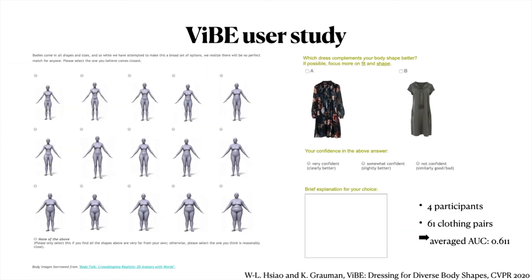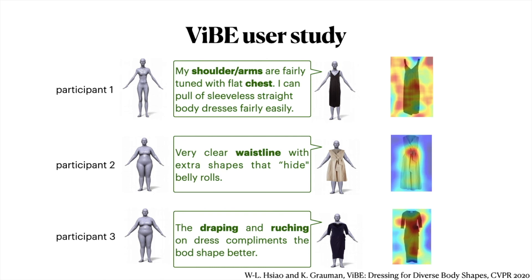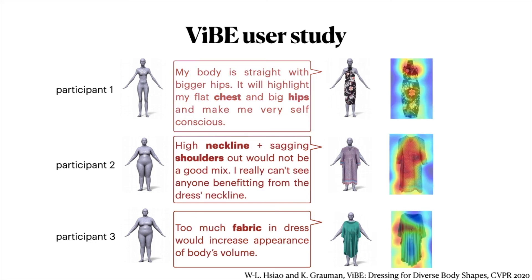As people know their own bodies best, we conduct another user study asking subjects which dress suits themselves best. We first ask subjects to select the body shape that best resembles them and feed the SMPL parameters of the selected bodies as features to our embedding to make predictions. We show cases where subjects explain the garments they preferred or not. Subject 2 prefers the selected dress for a clear waistline with extra shapes to hide belly rolls, and visualization of where our model attends corresponds to such an explanation. Subject 1 does not prefer a certain dress because she doesn't want her chest and hips to be highlighted, which again corresponds to our heat map.